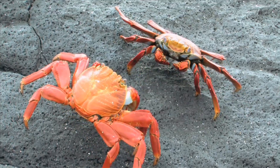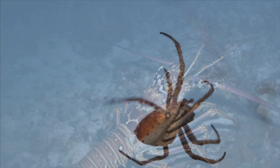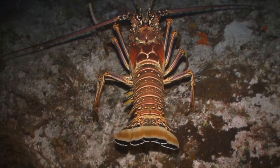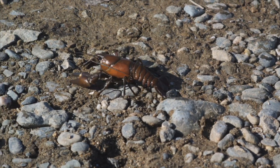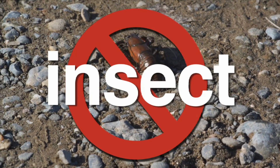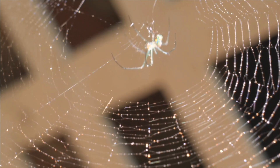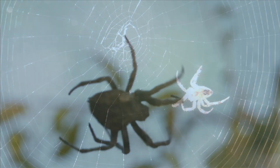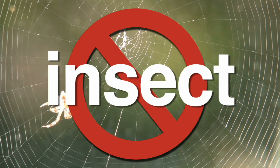Some animals may have similar characteristics to insects, but they are not insects. For example, a lobster has an outer skeleton and antennae. However, a lobster has four antennae and ten legs, so a lobster is not an insect. A spider may look like an insect, but a spider has eight legs and its body has only two parts. Also, spiders do not have antennae. A spider is not an insect.